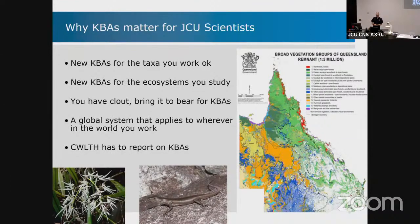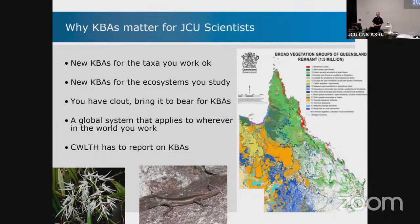For instance, in the Pacific, a lot of the funding coming out of Europe is actually tied to work in key biodiversity areas — if you can't tick that box, you're not going to get the euros. And even though they only seem to remember every four years or so, the Commonwealth government has to report on key biodiversity areas under the Sustainable Development Goals, so they come and ask us every now and then how they're doing.